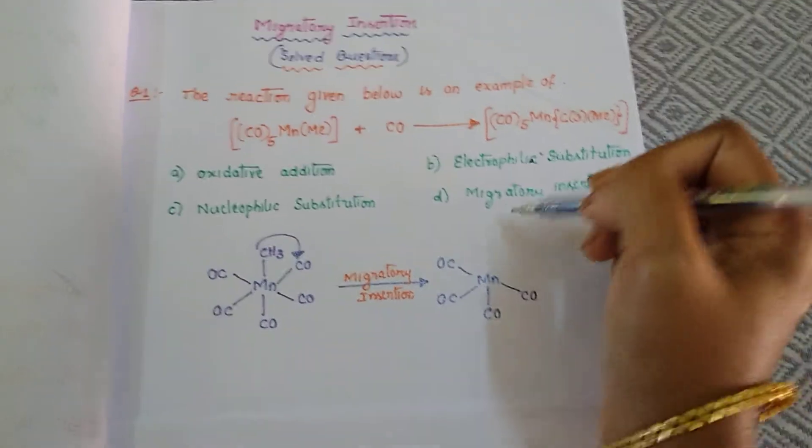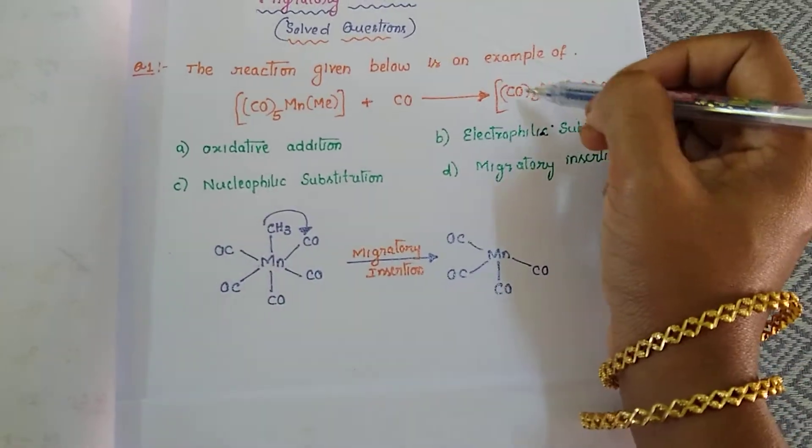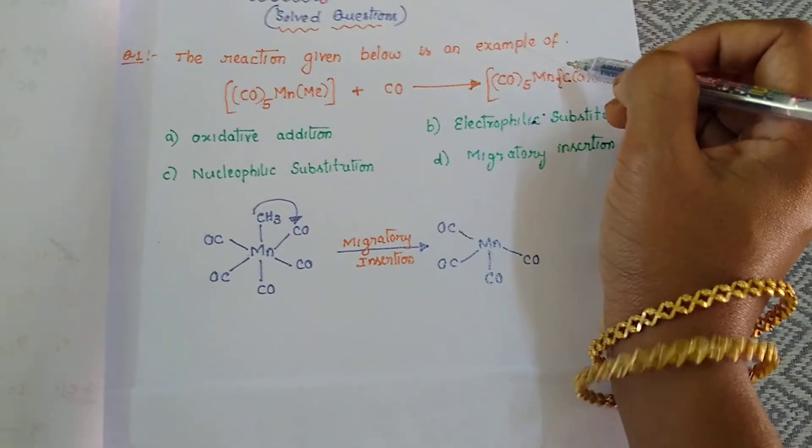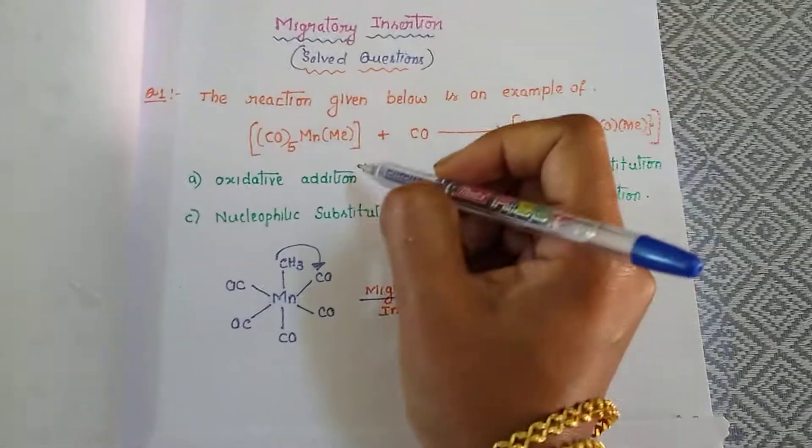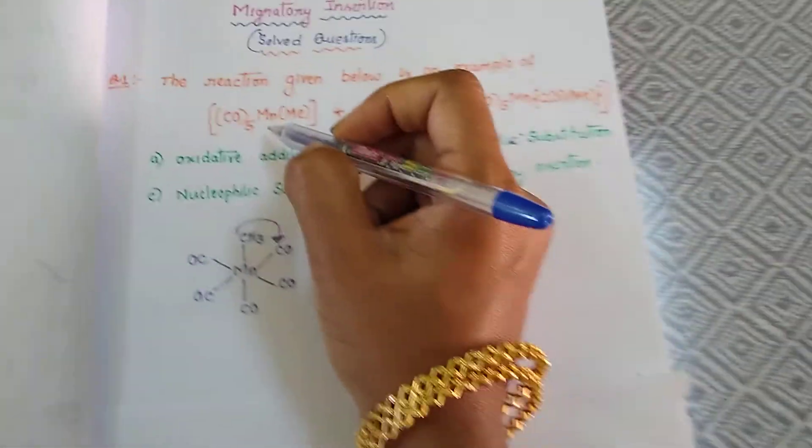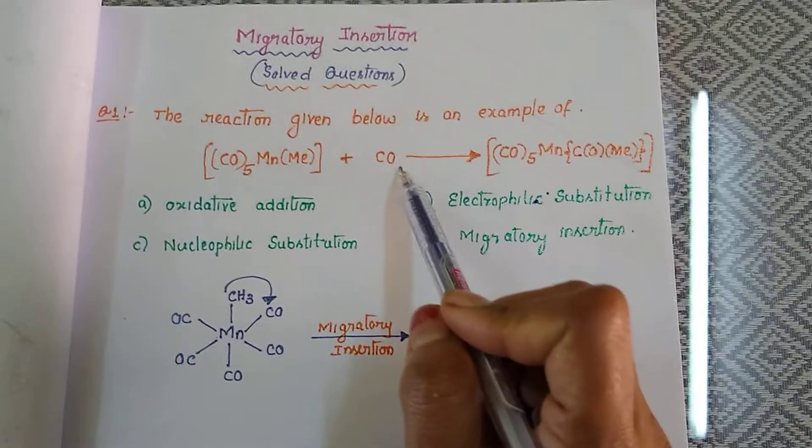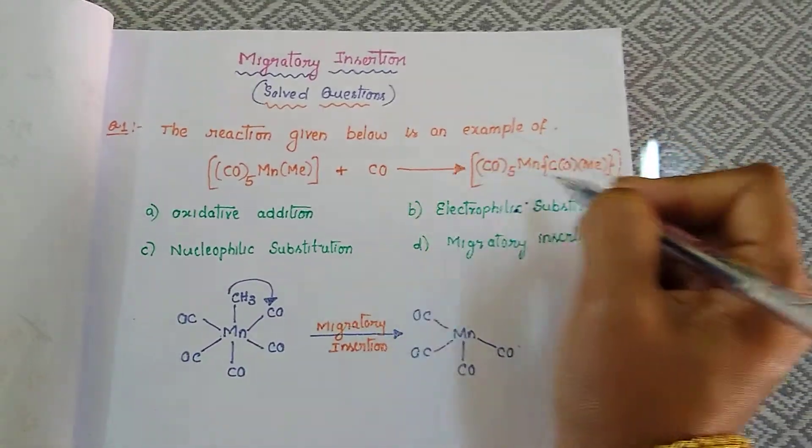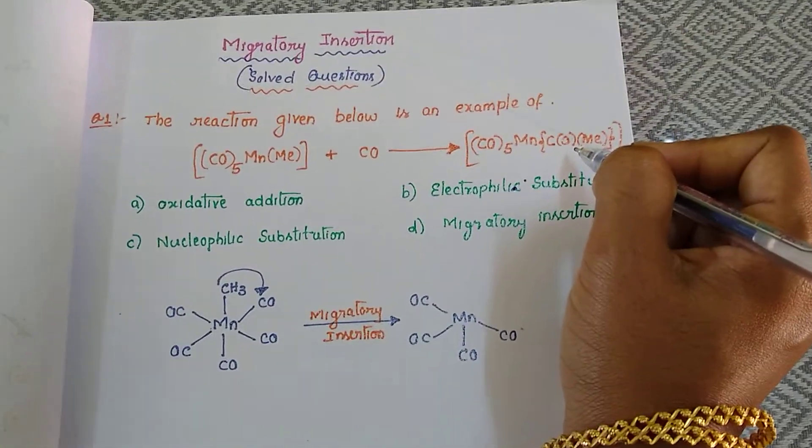Here you could see the solved questions. The first one: the reaction given below is an example of what? See here, they have given manganese attached to 5 COs and 1 ME which is going to react with carbonyl to form this product.